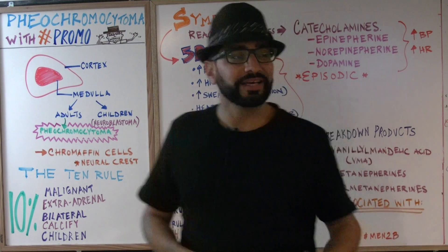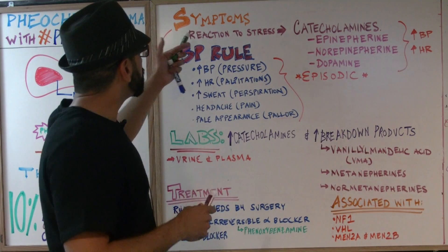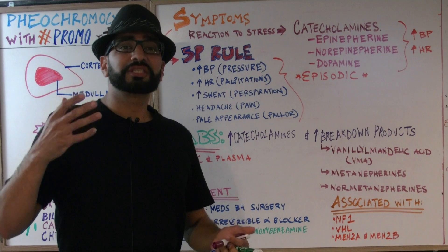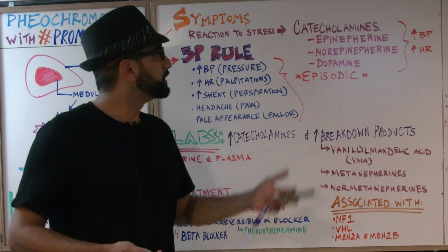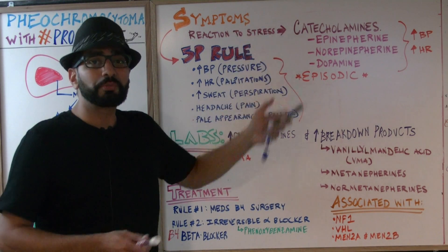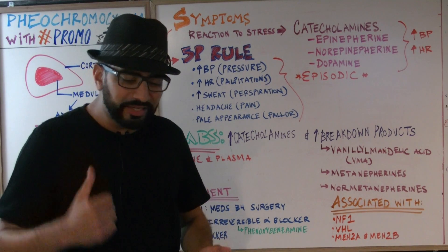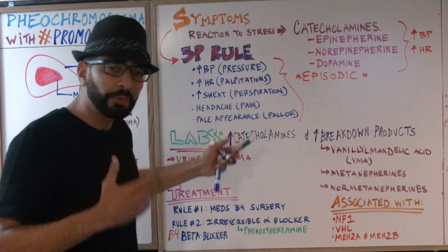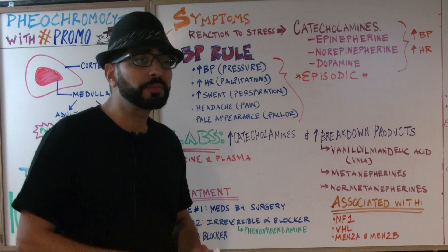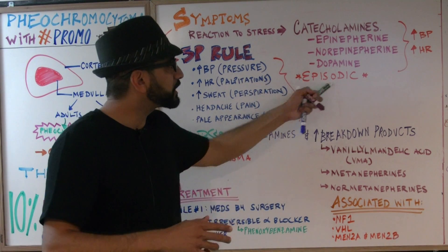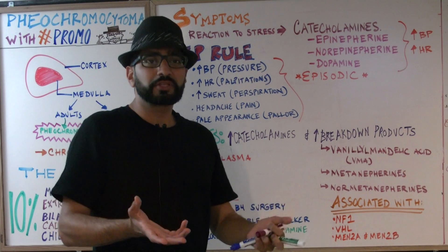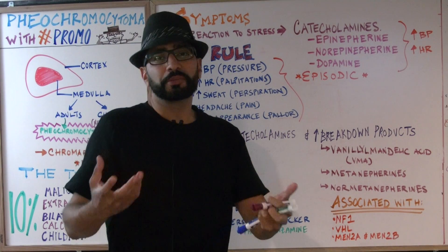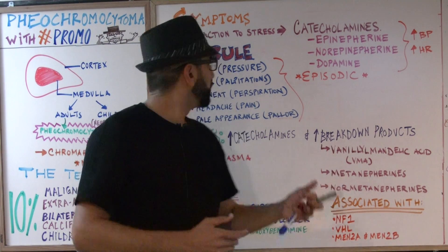So what exactly is pheochromocytoma doing? It's going to release catecholamines. Catecholamines are released when the patient is under stress. What are the catecholamines? We've got epinephrine, norepinephrine, and dopamine. All of these contribute to an increase in heart rate as well as an increase in blood pressure. A patient who has pheochromocytoma — what you want to know is that it occurs in episodic spells. That means there are times when the patient has symptoms and then the symptoms will go away — basically, it will relapse and remit.